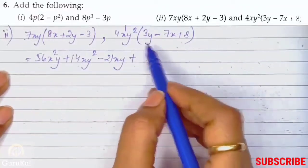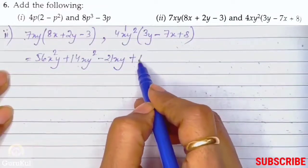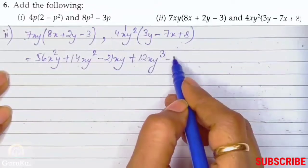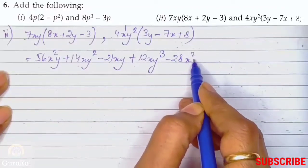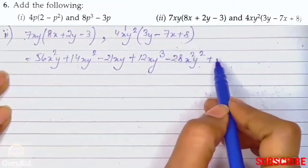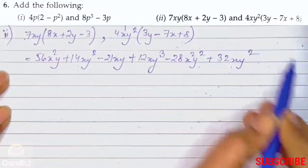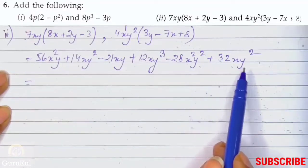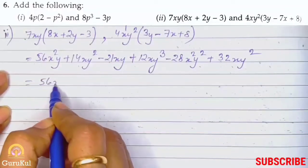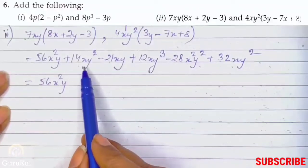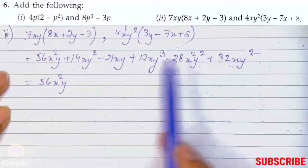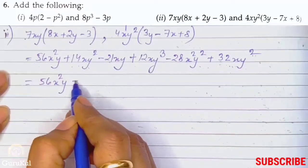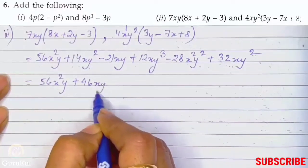We will move on to the second part. So 4 times 3 gives us 12xy³, plus into minus minus gives 28x²y², plus 4 times 8 gives 32xy². Next we look for x²y — it is nowhere else, so we copy it down as 56x²y. For xy², we have 40xy² plus 32xy² which gives us 46xy².